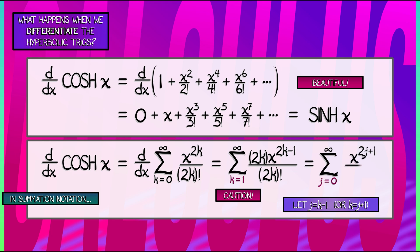we get the sum j goes from 0 to infinity of x to the 2j plus 1 divided by quantity 2j plus 1 factorial. That, of course, is the series for hyperbolic sine.